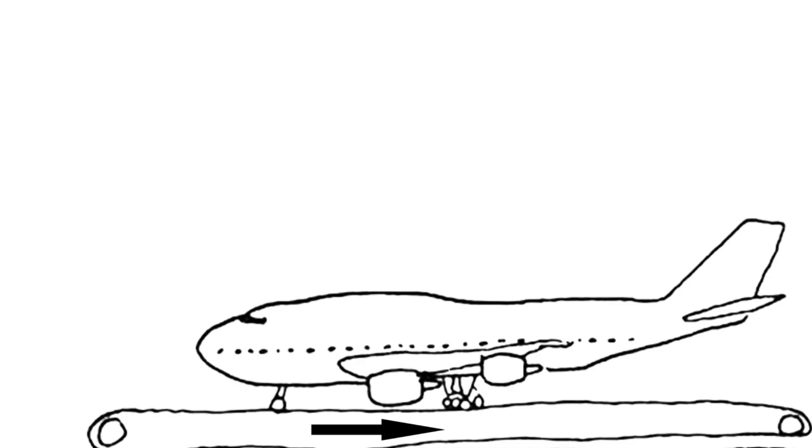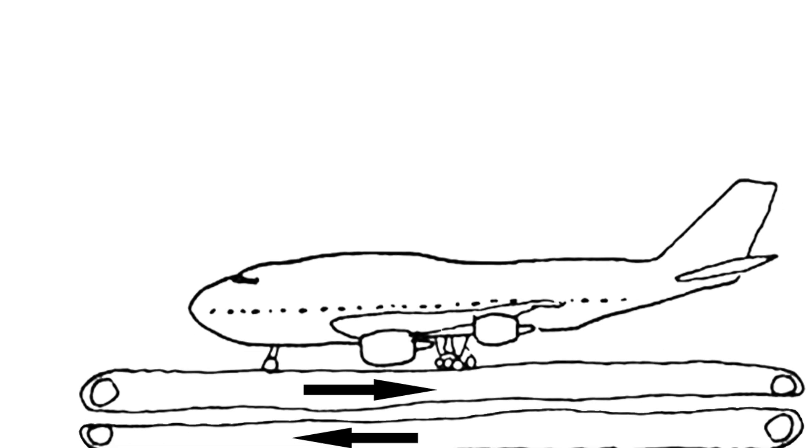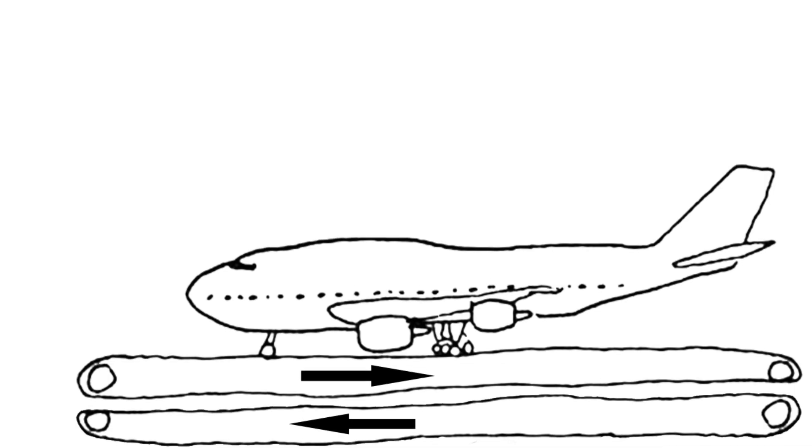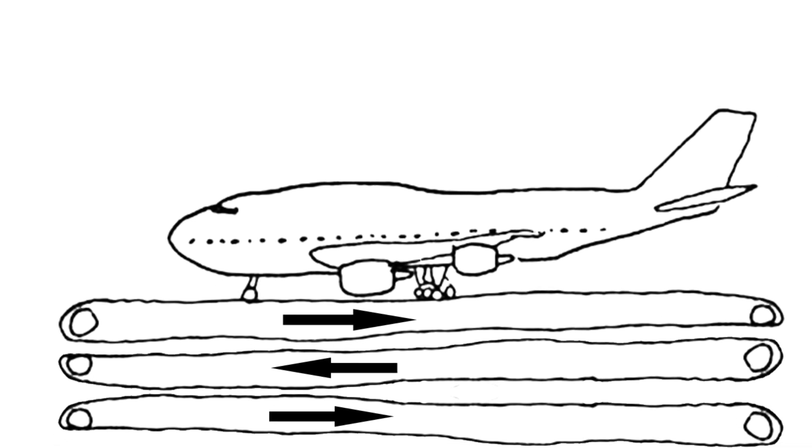Suppose you had a plane on a treadmill and that treadmill was running the opposite direction of the plane. Now suppose the treadmill was on top of another treadmill which was going the opposite direction. Suppose we take that and put it on top of a third treadmill going even more opposite.